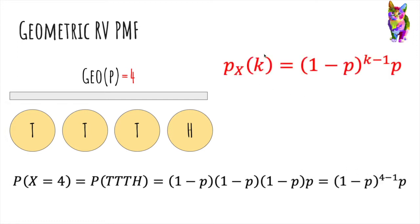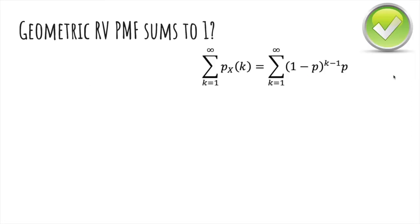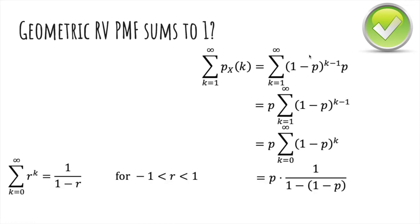So in general, the probability that it takes k flips to get our first head is we have to first get k minus 1 tails followed by our head. And you can actually show that the probability mass function sums to 1 if you remember your formula for geometric series, and that's also why it's called geometric random variable.